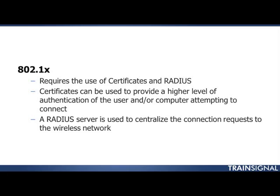RADIUS — a RADIUS server — is used to centralize connection requests. RADIUS goes beyond just a centralized server; it centralizes rules surrounding connection requests and also includes an accounting, or auditing, mechanism for keeping track of who connected, when they connected, and for how long. To wrap this up, you could do an entire lesson on setting up enterprise-level 802.1X, but what you need to know here is the basics: it is an enterprise-level form of authentication using certificates and RADIUS.